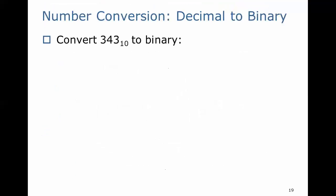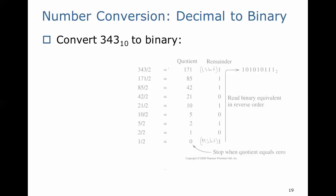How do we convert between different number bases? Here, we're going to look at decimal to binary. Let's convert 343 base 10 to binary. Here's how you do it. You take 343 and you divide it by 2. That gives you 171 and you have a remainder of 1.